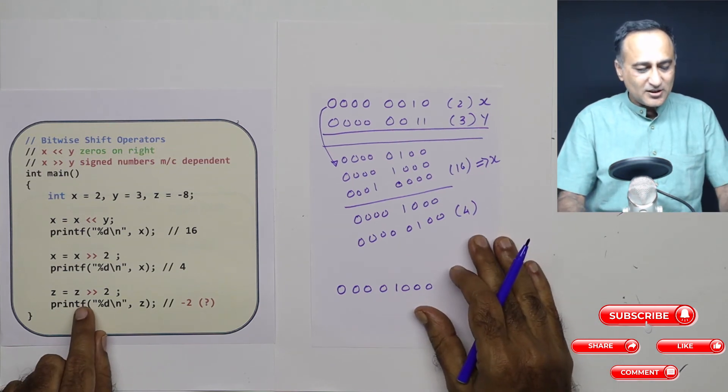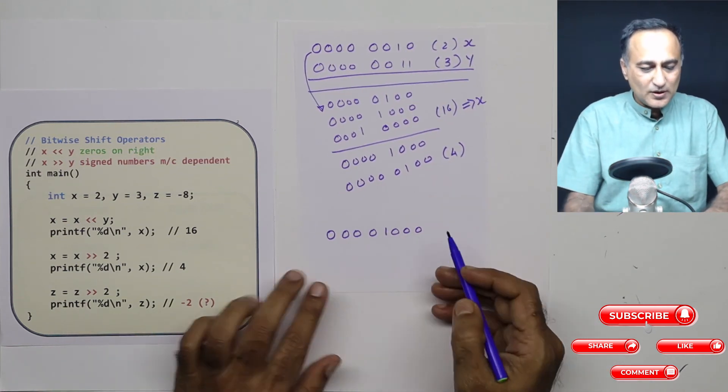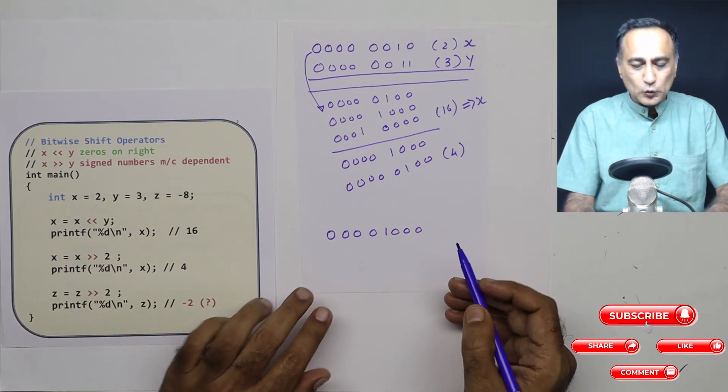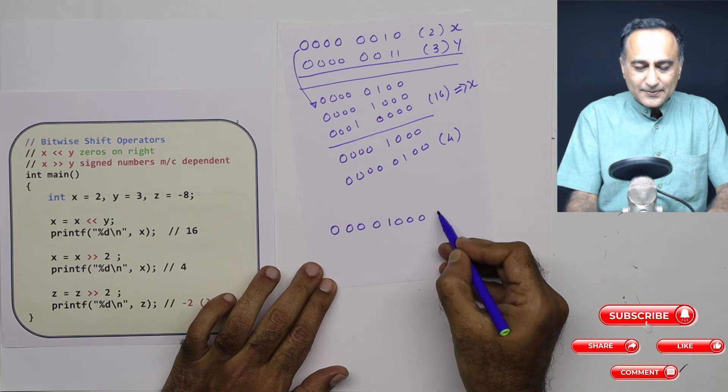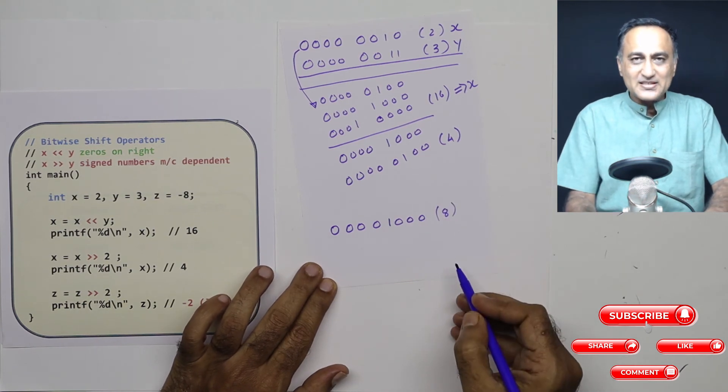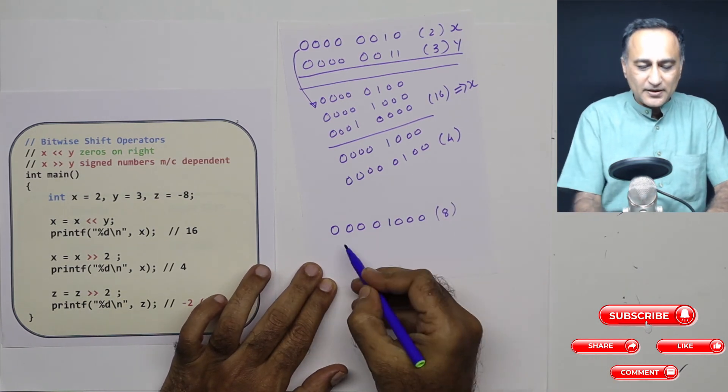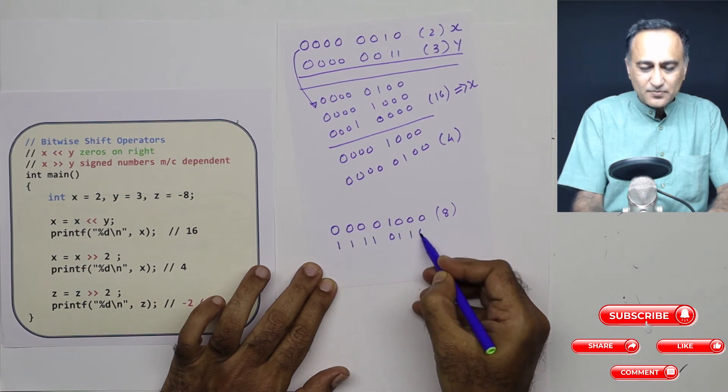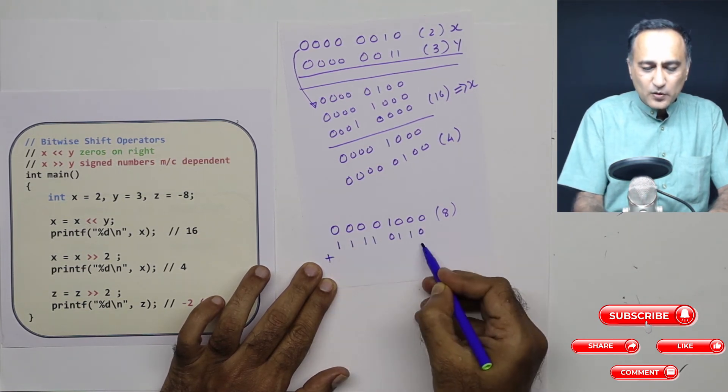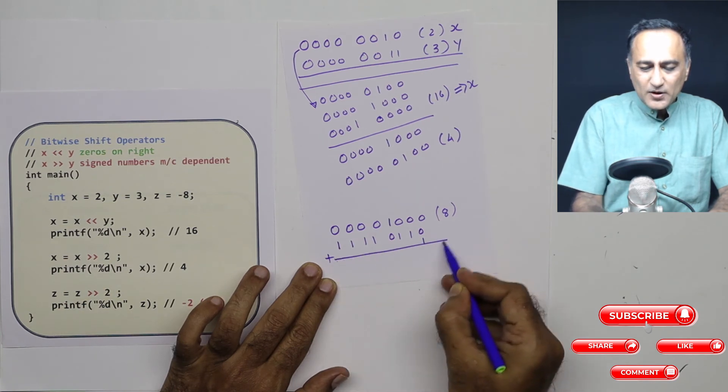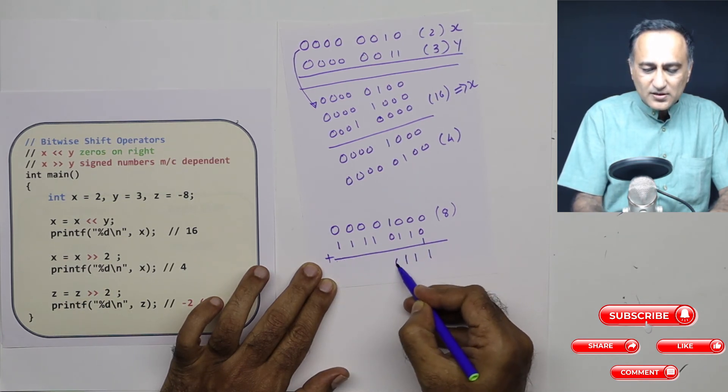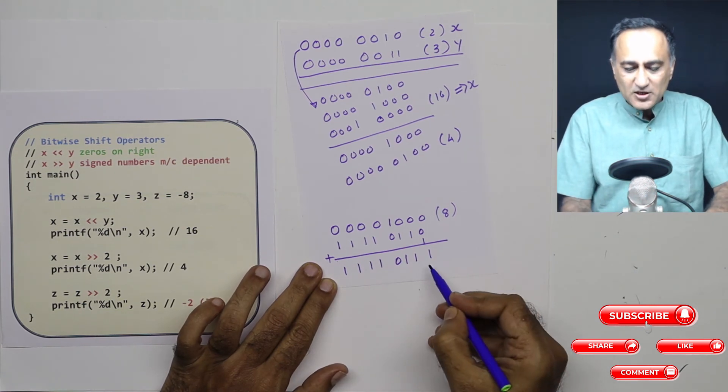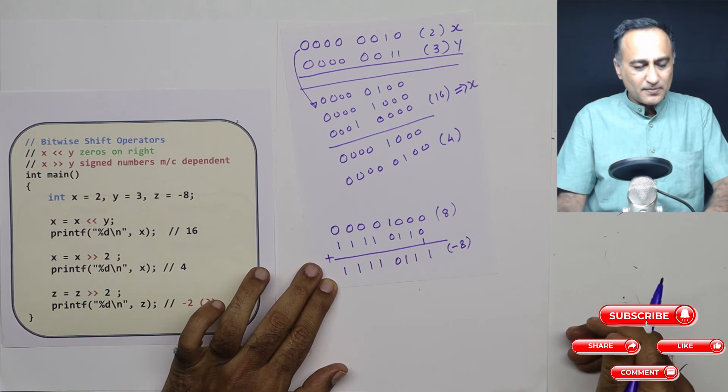Now let's take a look at the third one. Z equals minus eight, so z is z right-shifted by two. This is eight. If I have to make it minus eight, I'll use the two's complement. In two's complement, first zeros become one and ones become zeros, then I'm going to add one to this. If I add one to this, this is 1110 1111 and 1. This is the representation of minus eight in two's complement.